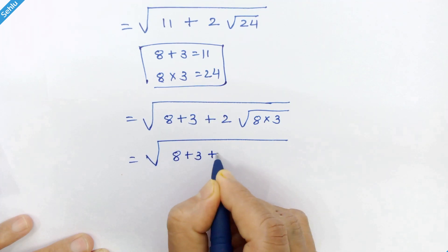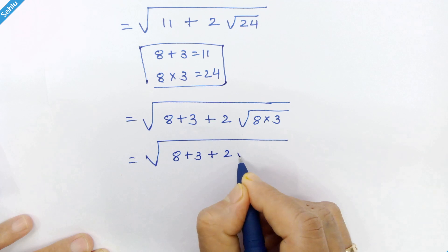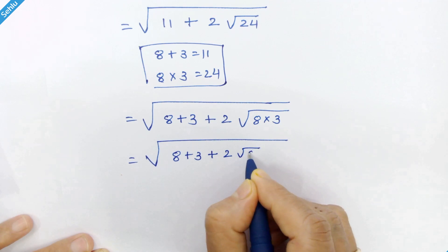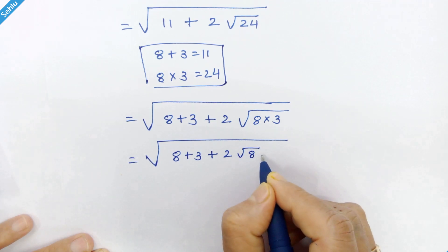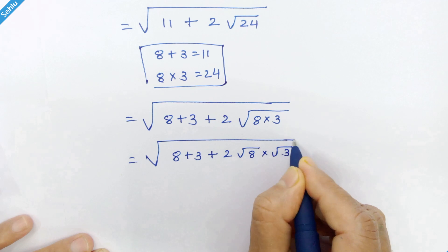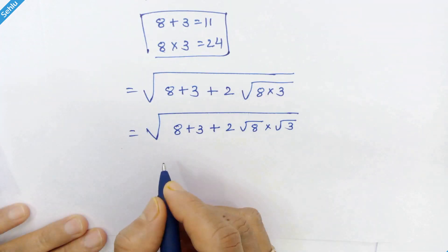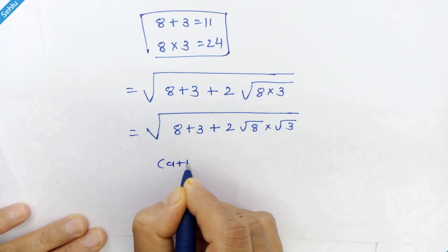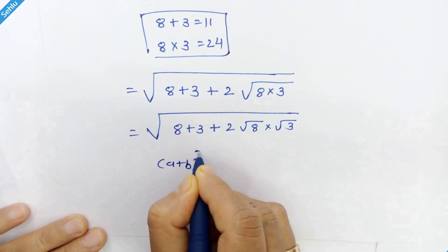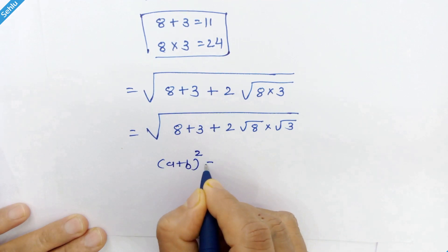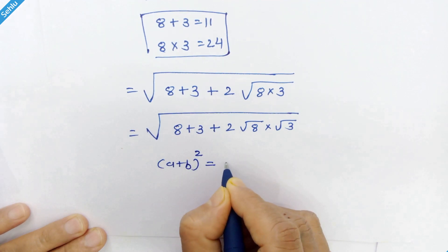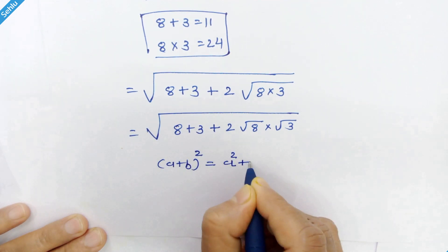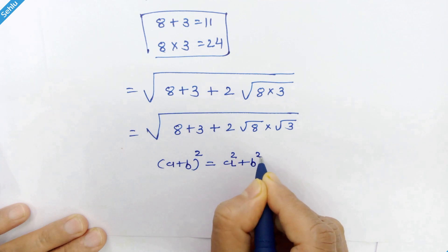We can write it as 8 plus 3 plus 2 times square root of 8 times square root of 3. Now this is an identical situation like a plus b whole square, which equals a squared plus b squared plus 2ab.